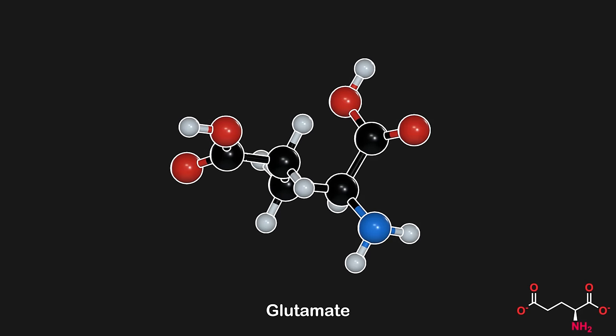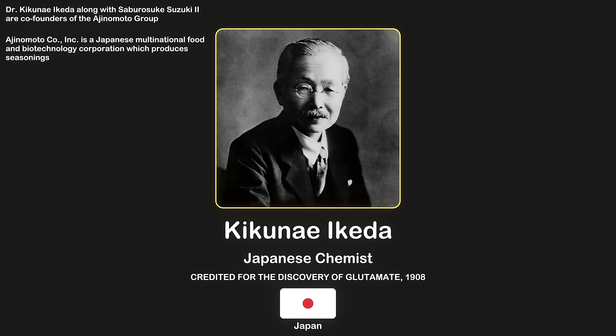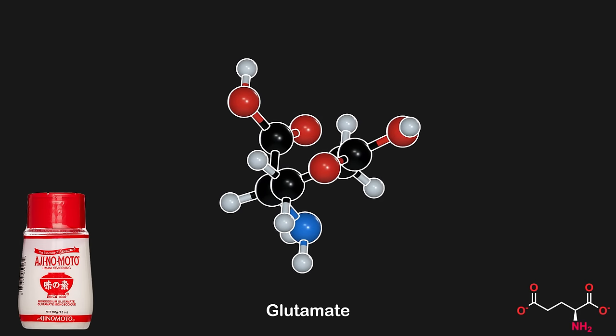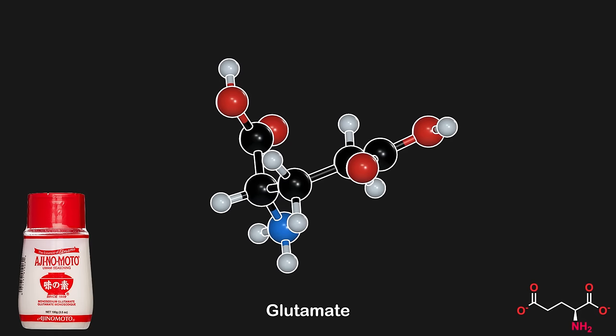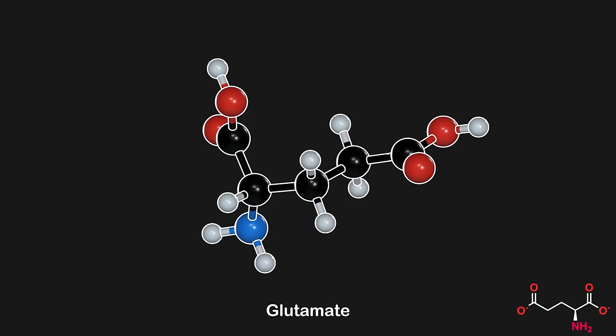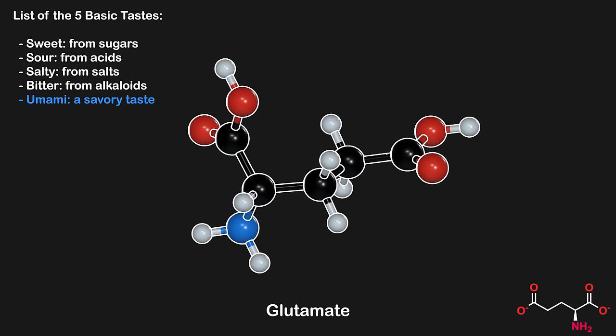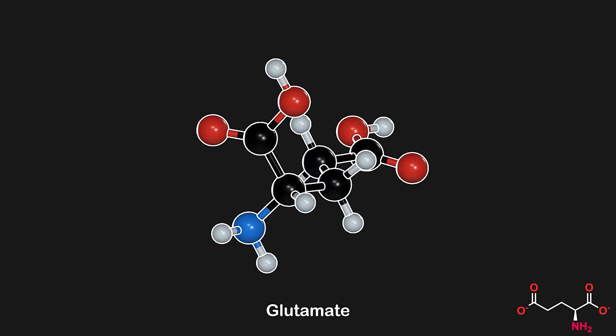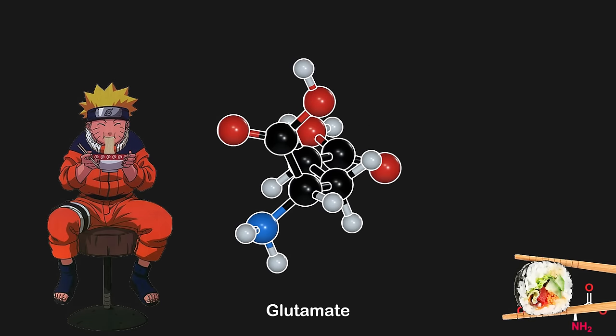The discovery of glutamate can be attributed to the Japanese scientist Kikunae Ikeda, who first identified it in 1908 while investigating the unique umami flavor in seaweed broth. Glutamate is the molecule behind monosodium glutamate, also known as MSG, which is a popular flavor enhancer which gives food its unique umami taste. While it was known to be a part of the umami flavor, the importance of glutamate as a neurotransmitter wasn't recognized until much later. So the next time you're savoring a bowl of ramen or a piece of sushi, remember, you're enjoying a little bit of glutamate magic outside of the brain.